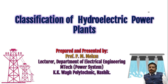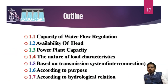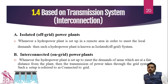Welcome friends. In the second part, we will discuss the remaining points of bifurcation of hydroelectric power plants. Based on the nature of load characteristics and transmission system, we categorize power plants into two different types: one is isolated, which also means off-grid power plant, and another one is interconnected, or on-grid.